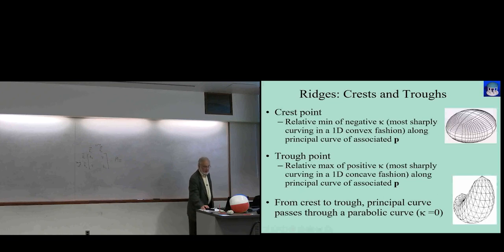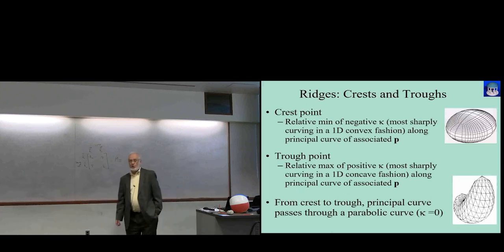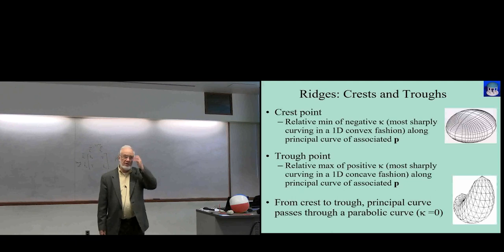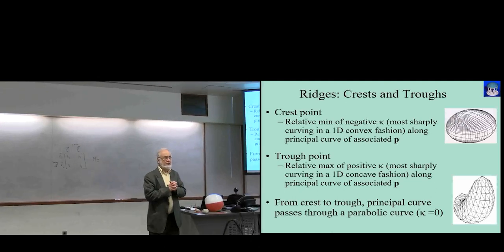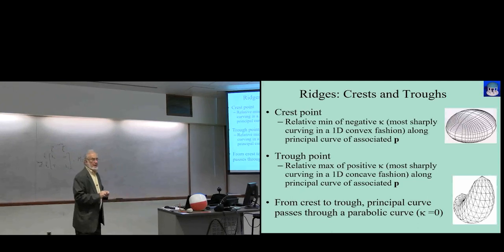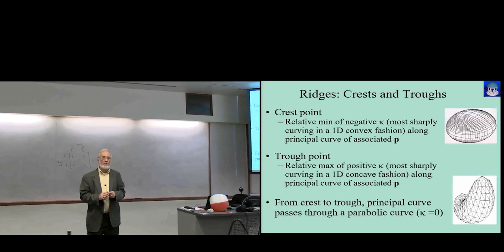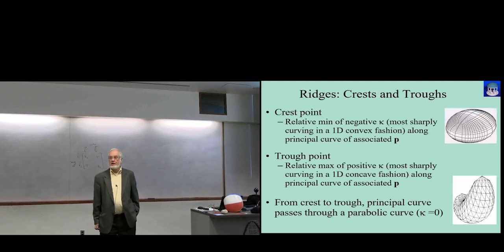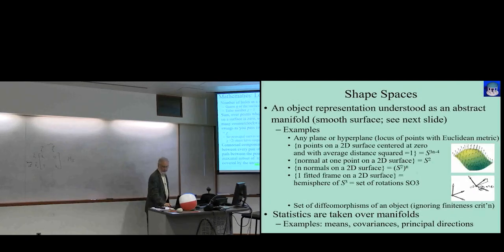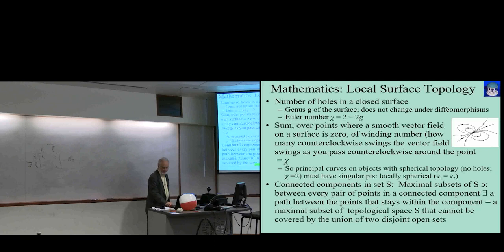This singular point has winding number two. The sum of the winding numbers over all those points must equal the Euler number — a surprising topological result. This is important as we consider principal direction properties on the sphere. When kappa1 equals kappa2, the radius of curvature is the same in all directions, true for any point on a sphere. At locally spherical places, we get so-called umbilics. These are computationally tricky but are special places we want to use for correspondence.